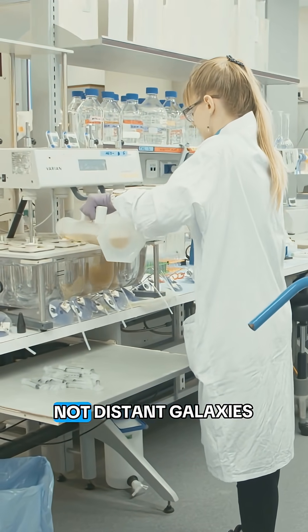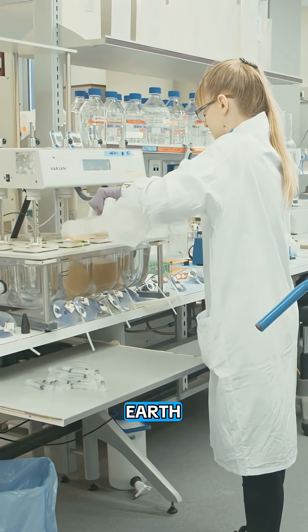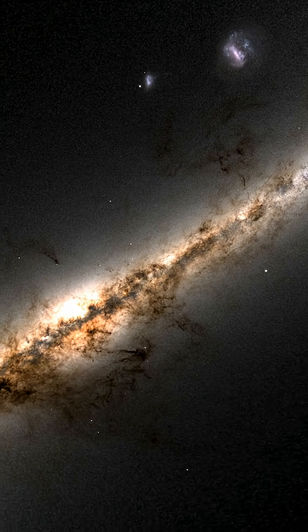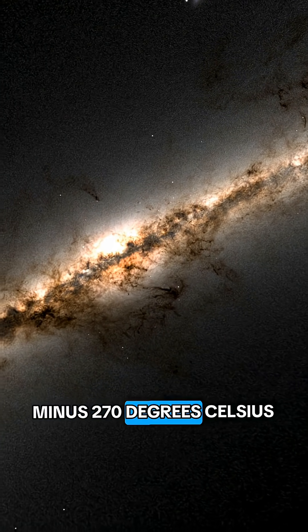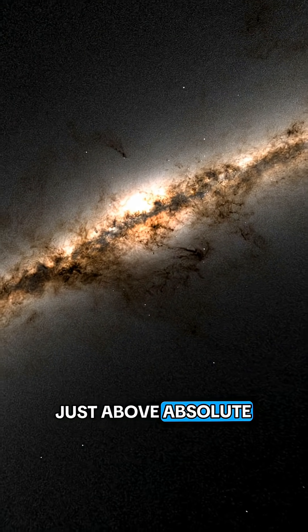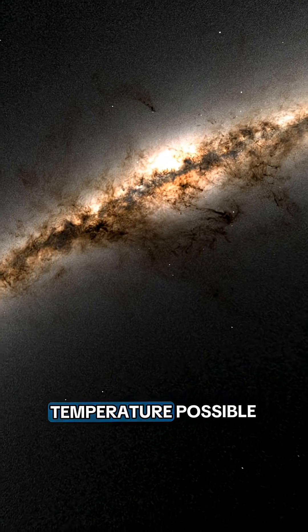Not space. Not distant galaxies. Earth. In space, the background temperature is about minus 270 degrees Celsius, just above absolute zero, the coldest temperature possible.